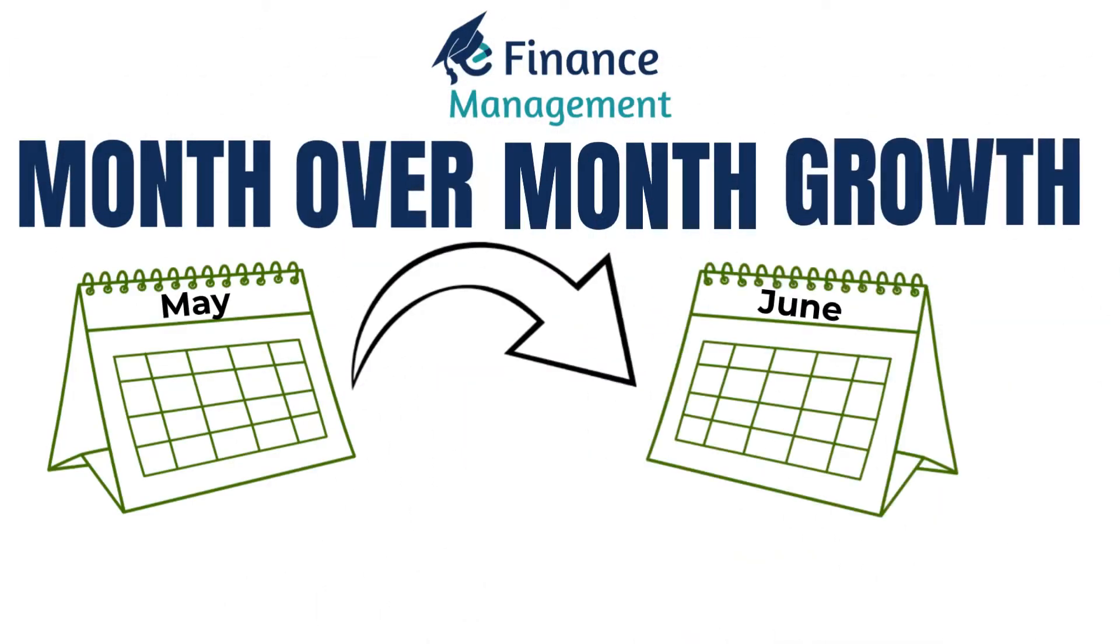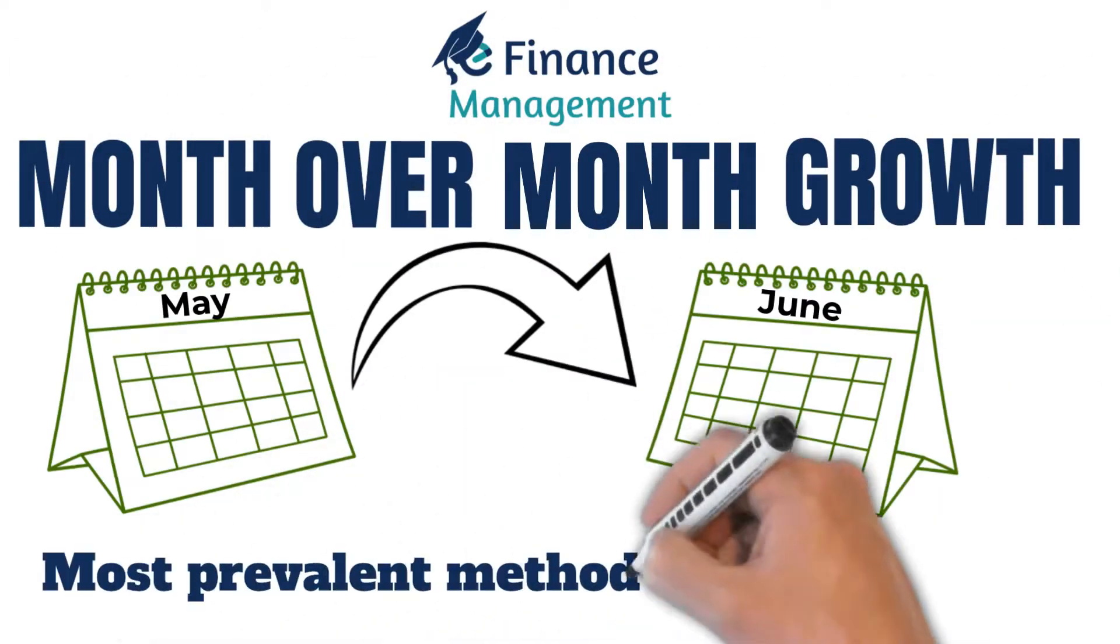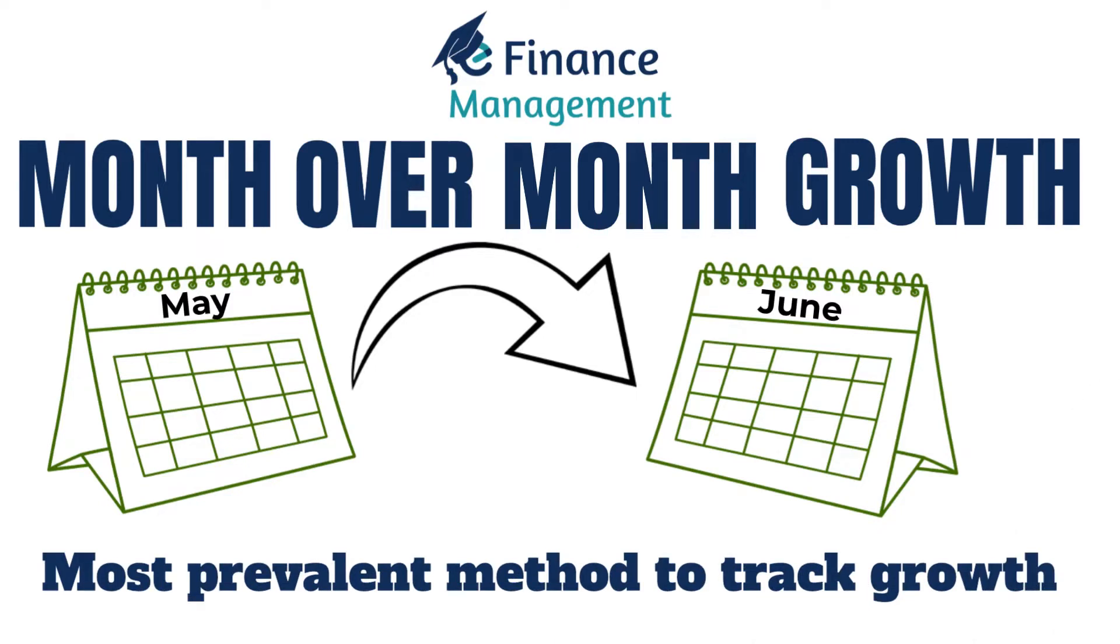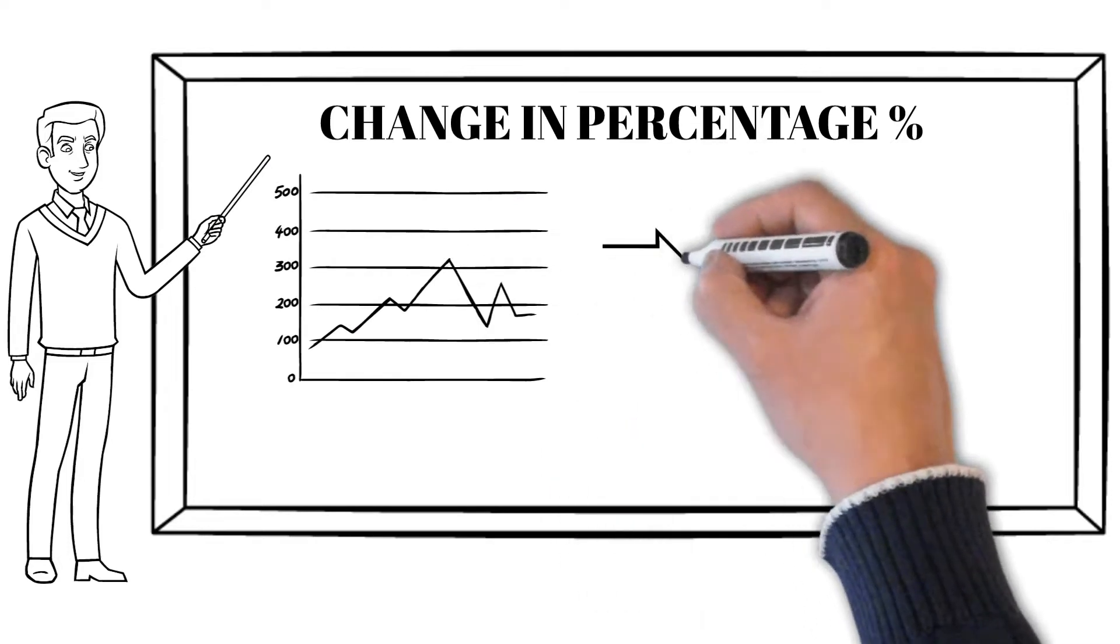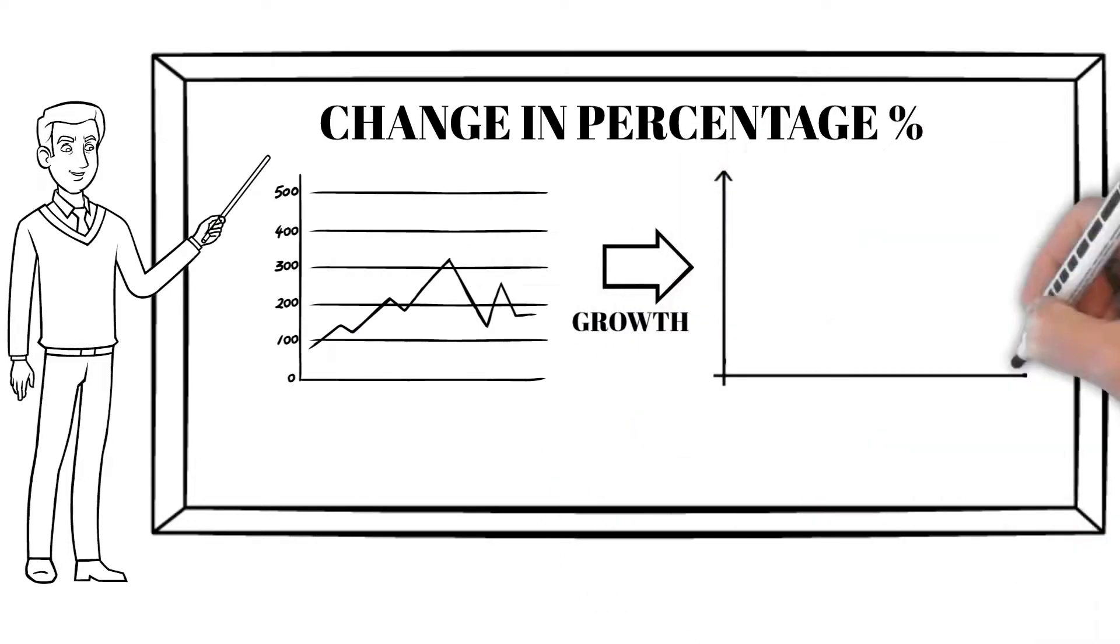Month-over-month growth is one of the most prevalent methods to track growth. In this video, we will learn all the aspects of month-over-month growth. Month-over-month growth shows the change in the value of a statistic as a percentage of the previous month's value.